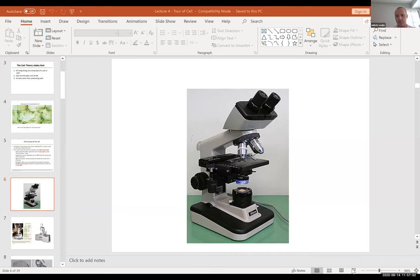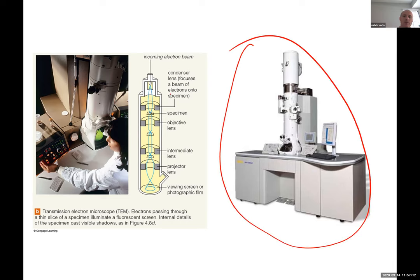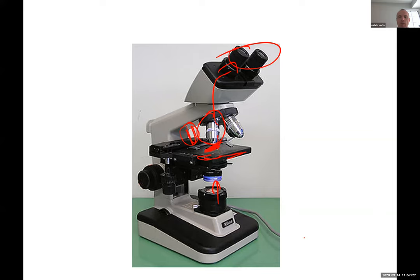The electron microscope can magnify up to a billion times — look at how gigantic it is. The light microscope can magnify only up to about a thousand times. The microscopes we use in the lab throughout the semester magnify up to about 420x.